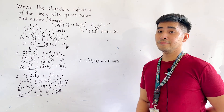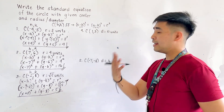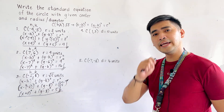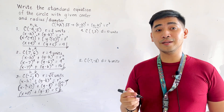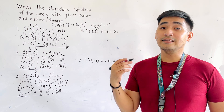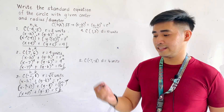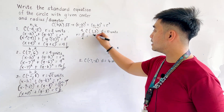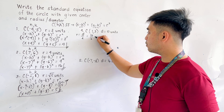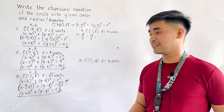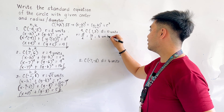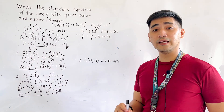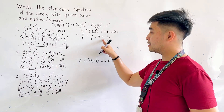For number 4, the center is located at (1, 3), and we are given a diameter of 12 units. If given the diameter, always remember that the radius is half of the diameter. So radius equals diameter over 2, which equals 12 over 2. Therefore, the radius is 6 units. So we have center at (1, 3) and radius equal to 6 units.